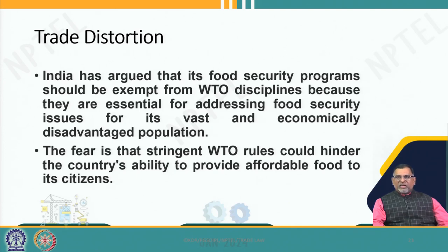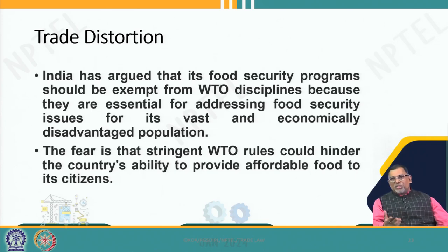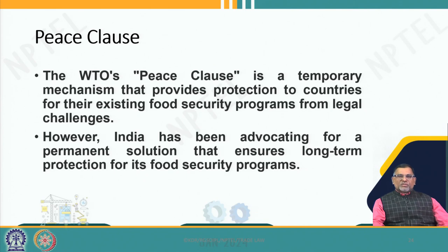Whether in India or other countries, Asia is number 1 in the hunger index — the largest country producing food, like India and others, providing necessary food, and yet the Asian region is number 1 in the hunger index. We talked about the peace clause earlier — the WTO peace clause provides a safe period of time for countries, keeping these food programs free from WTO dispute settlement for the time being.